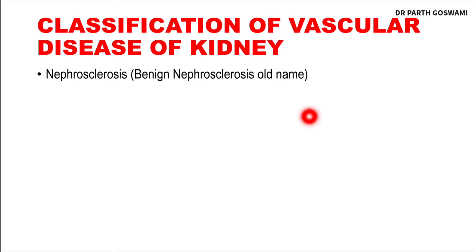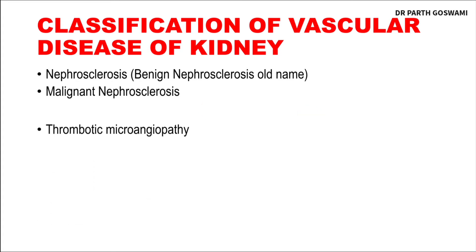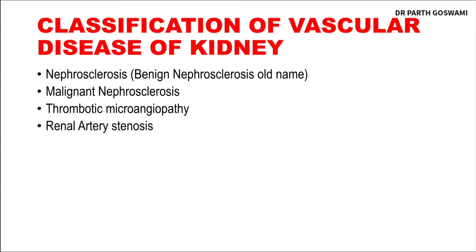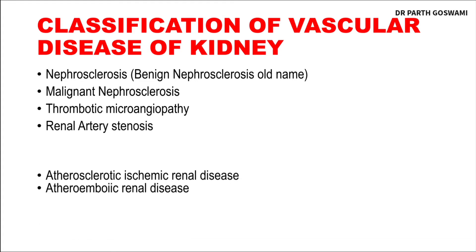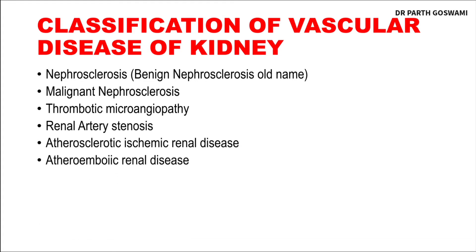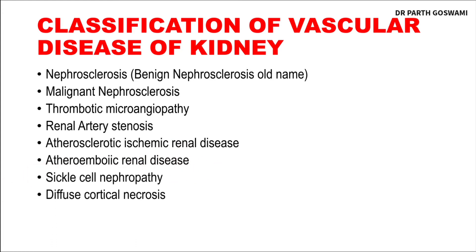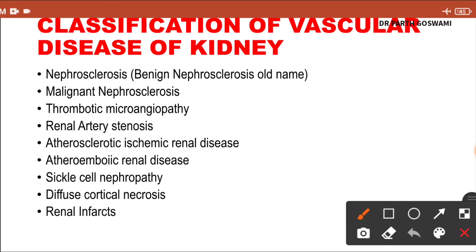The first one is benign nephrosclerosis, then malignant nephrosclerosis, thrombotic microangiopathy, renal artery stenosis, systemic renal disease due to atherosclerosis or atheroemboli renal disease, sickle cell nephropathy, diffuse cortical necrosis, and renal infarction.